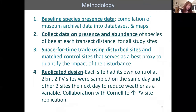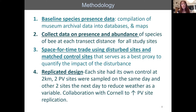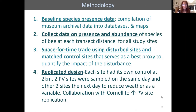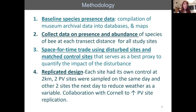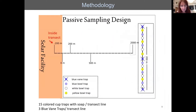For our California project, funded by the Bureau of Land Management, they asked us to examine ground-mounted solar sites that were already built and determine what kind of bee and pollinator diversity was present. We developed a strategy to establish a baseline of species, develop maps, and look at archival data. We collected data on presence and abundance, used a space-for-time trade with disturbed sites and matched control sites, and replicated the design across several sites.